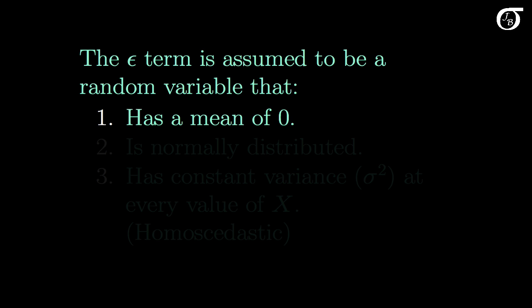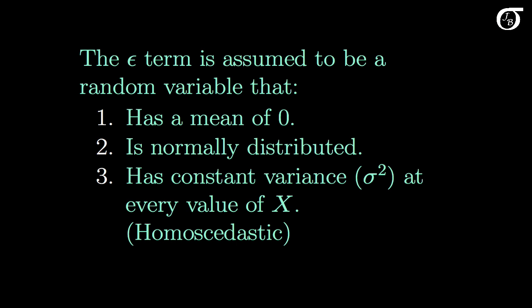The epsilon term is assumed to be a random variable that has a mean of 0, is normally distributed, has constant variance at every value of x, and we're going to call that variance sigma squared. We sometimes say that the error terms are homoscedastic, meaning they have the same variance.